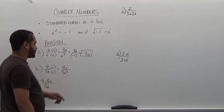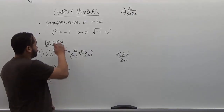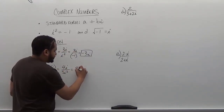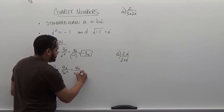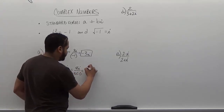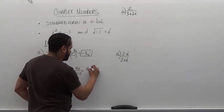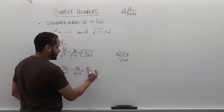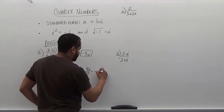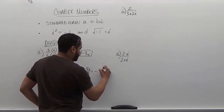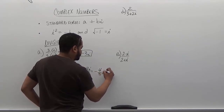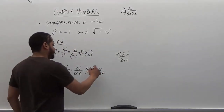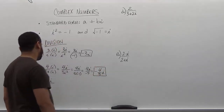Remembering that i² represents negative one, we see we have 4i divided by five times negative one, which is negative five. So we have 4i divided by negative five, and the negative term moves up, and we get negative four over five i. That's our solution for this problem.